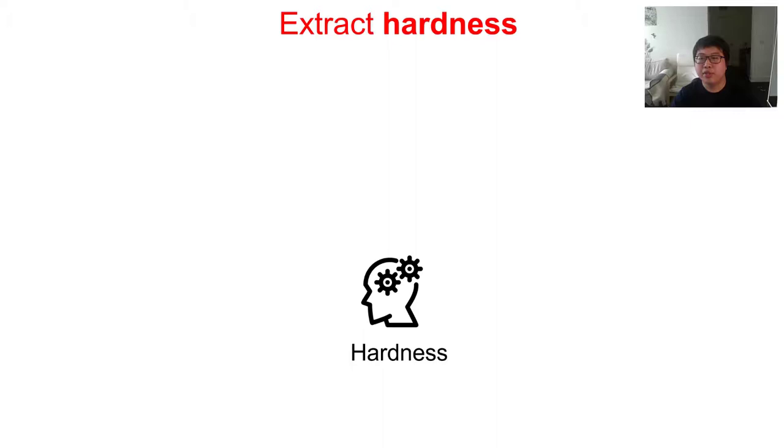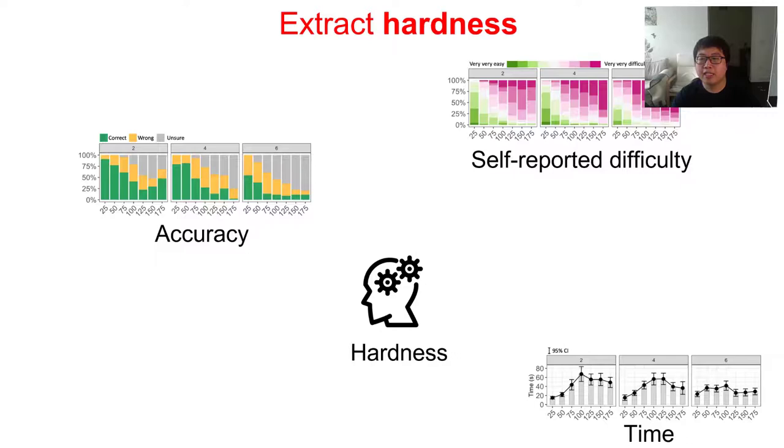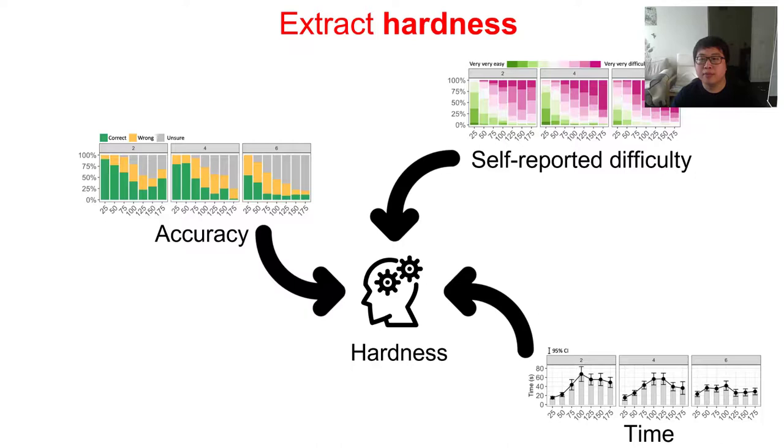In the described analysis, we only have two categories, easy and difficult. To obtain a more nuanced understanding of the physiological measures, we need to extract a uniform measure for the trials. We call this hardness. We believe the hardness is reflected by the traditional measures, that is accuracy, self-report difficulty and time. One way is to extract a latent variable behind them. So we use the principle axis factoring to extract the hardness from the three traditional measures.